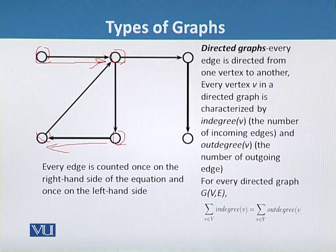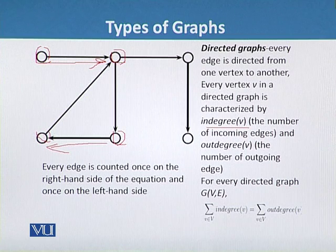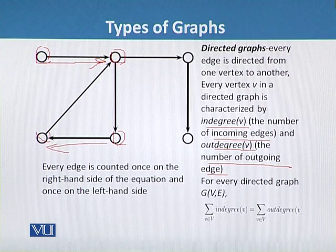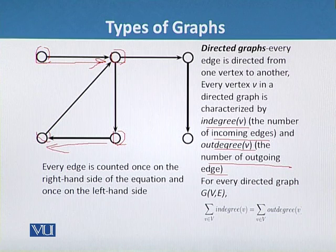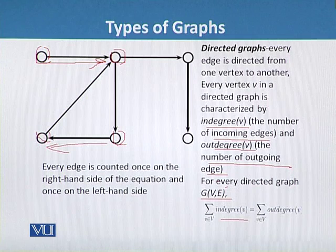These types of graphs are called directed graphs. Every vertex V in a directed graph is characterized by in-degree(V), the number of incoming edges, and out-degree(V), the number of outgoing edges. For every directed graph G = (V, E), the summation of in-degree(V) is equal to the summation of out-degree(V).